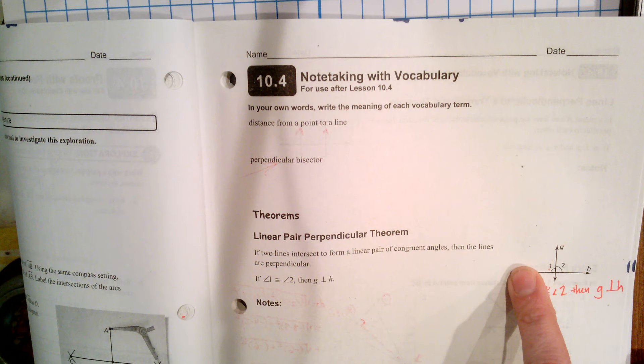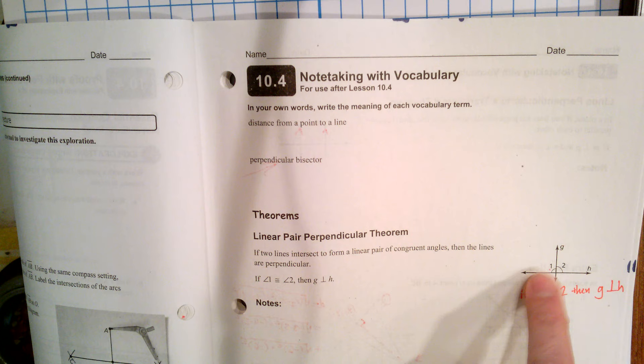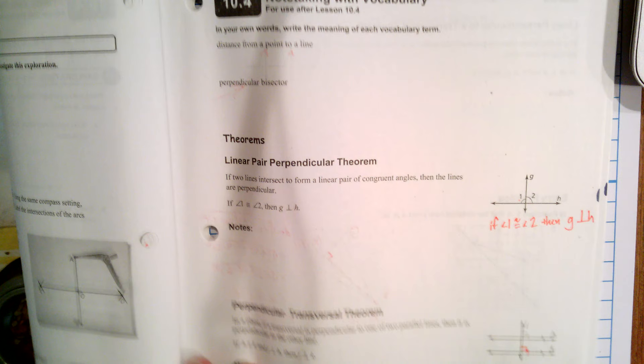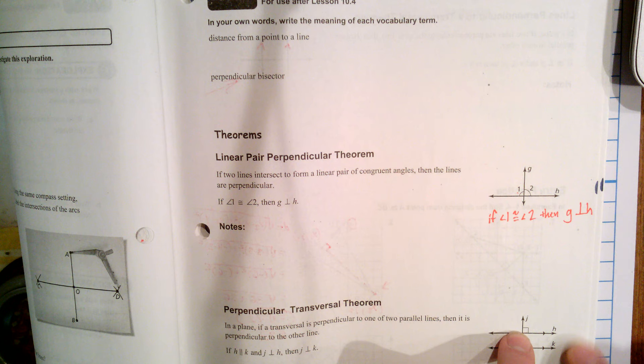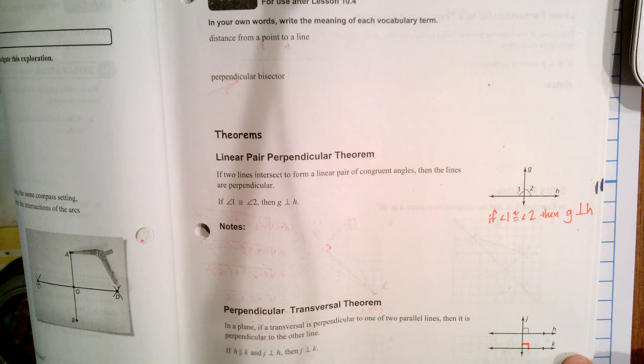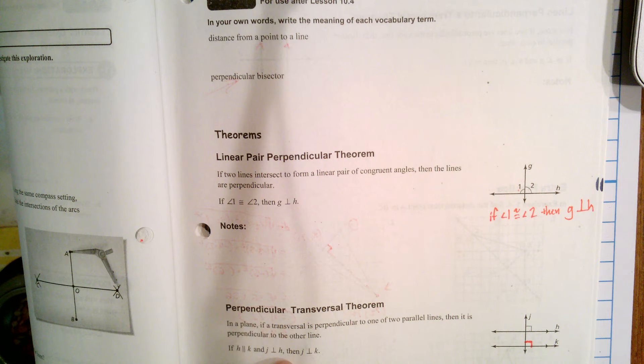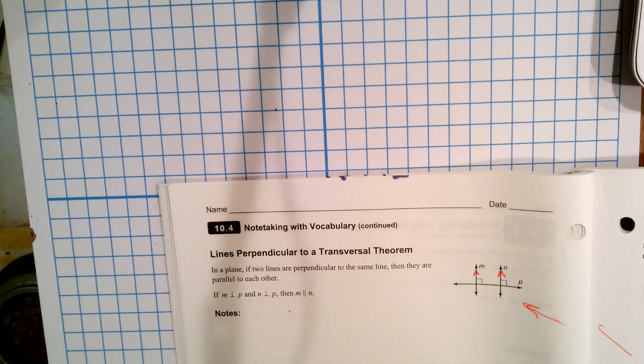The first is the linear pair perpendicular theorem. What that means is if I have two lines, line G and line H, and they're intersecting, that forms two linear paired angles. So angle 1 and angle 2 form a linear pair. But what do we know about linear pair? By definition, a linear pair is supplementary. So angle 1 and angle 2 have to add up to 180. So the linear pair perpendicular theorem is saying if angle 1 is congruent to angle 2, then line G has to be perpendicular to line H because those two would have to be 90 degree angles because they're equal measurements.